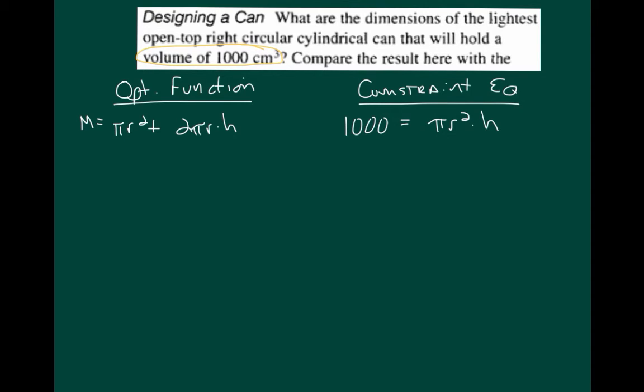All right. So now we have a function, an optimization function in two variables, r and h. And I need to solve for one of them. So the easiest one to solve for is h. So that means that my constraint equation, when solved for h, will be 1,000 over pi r squared. Now, let's substitute that into the optimization function.